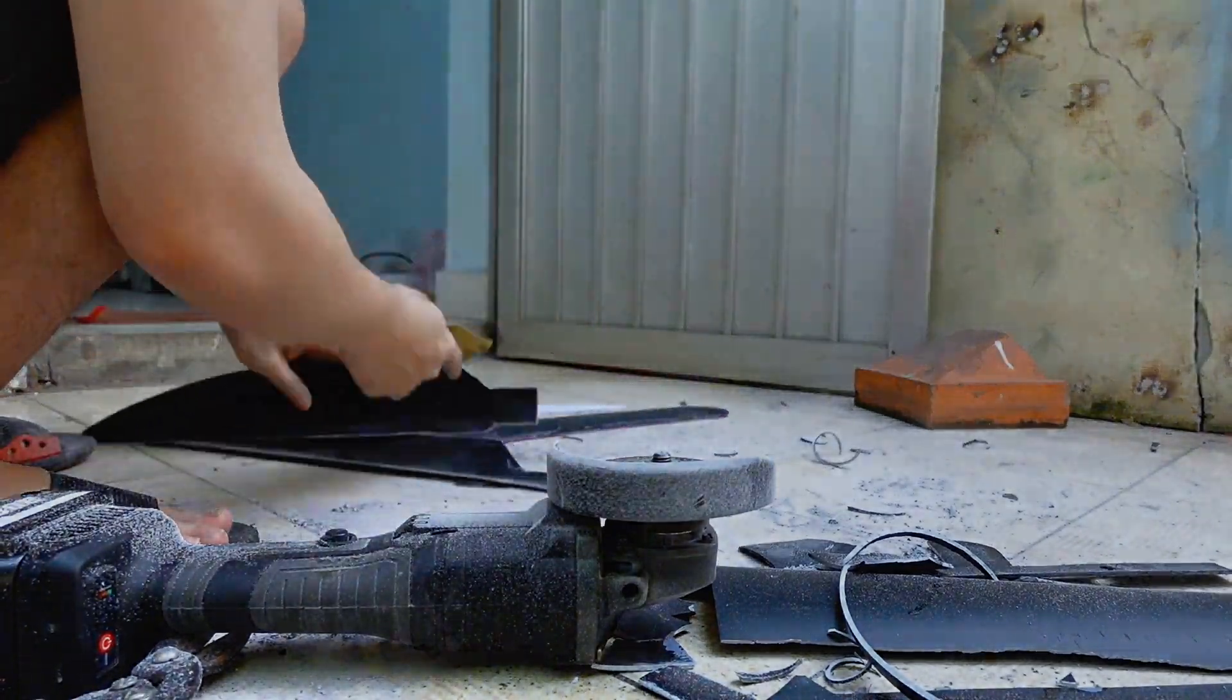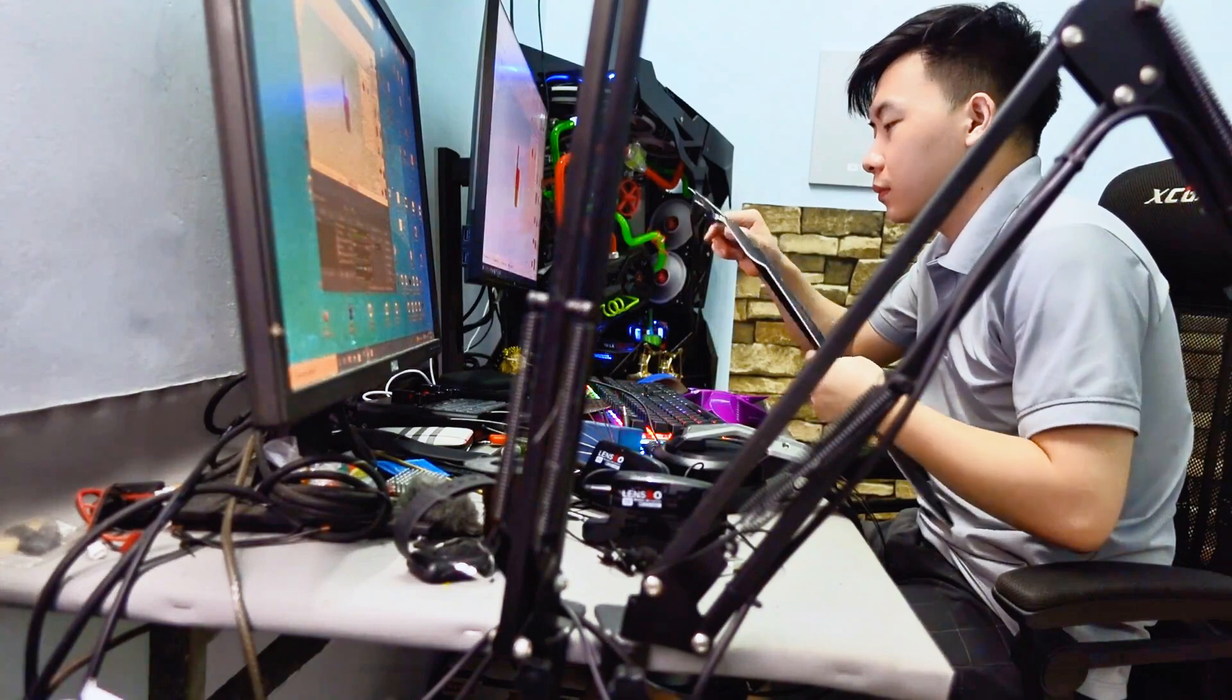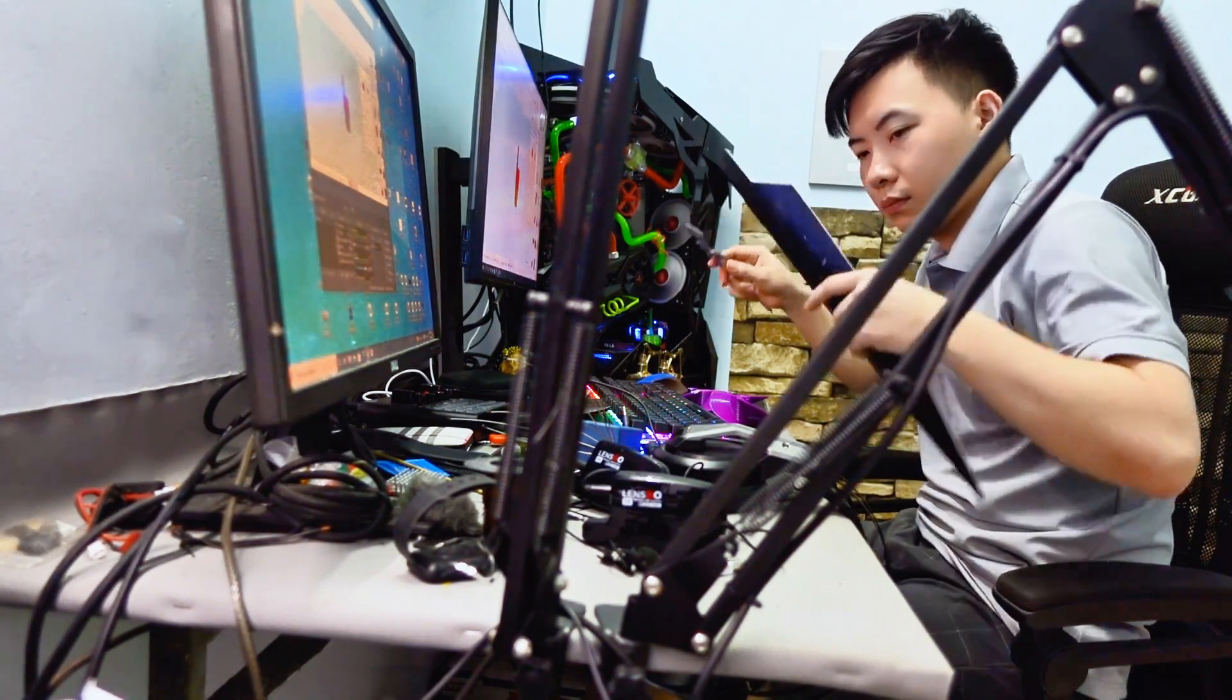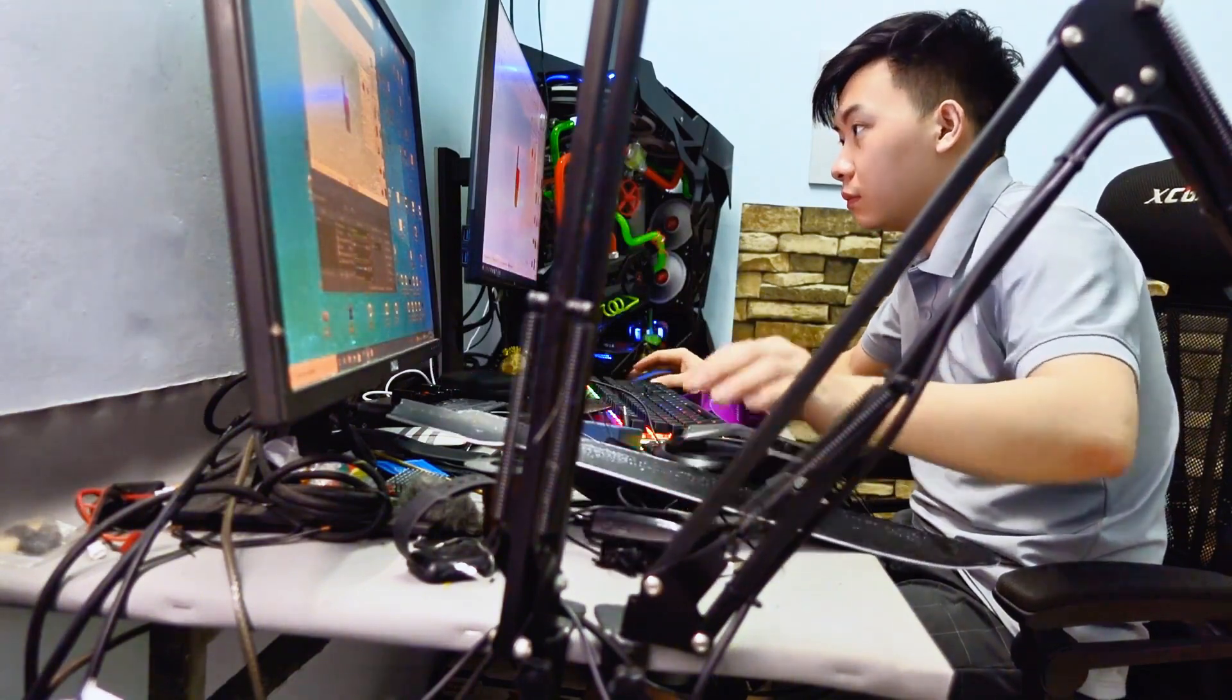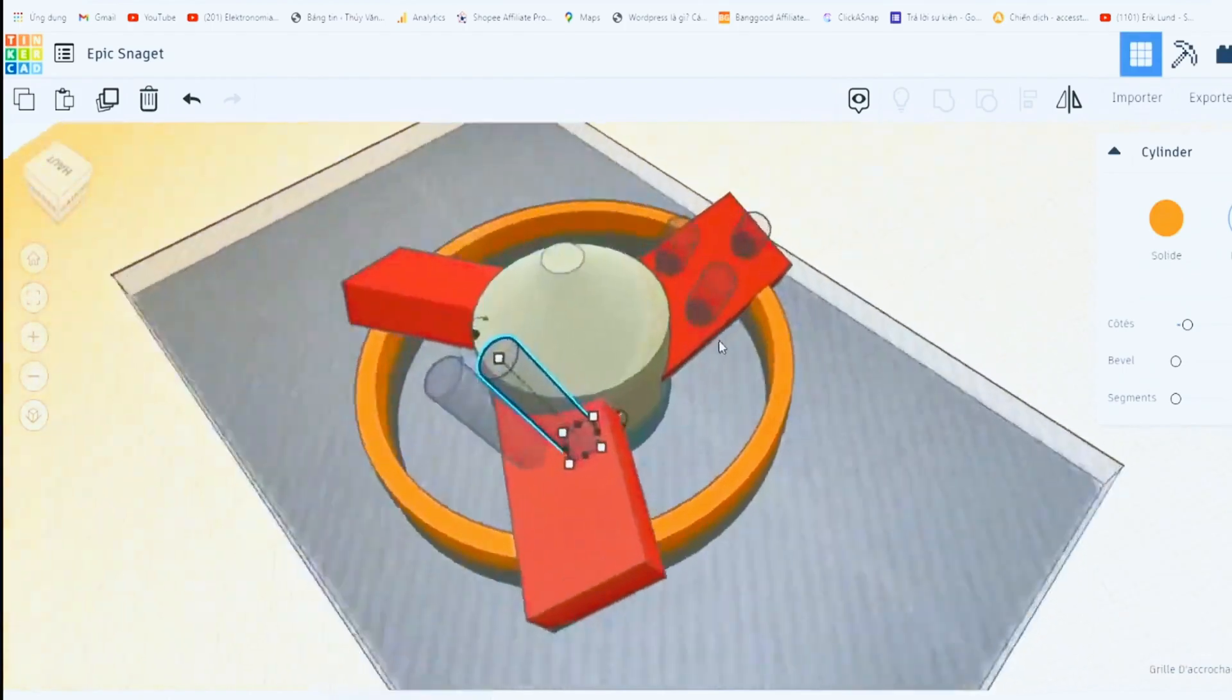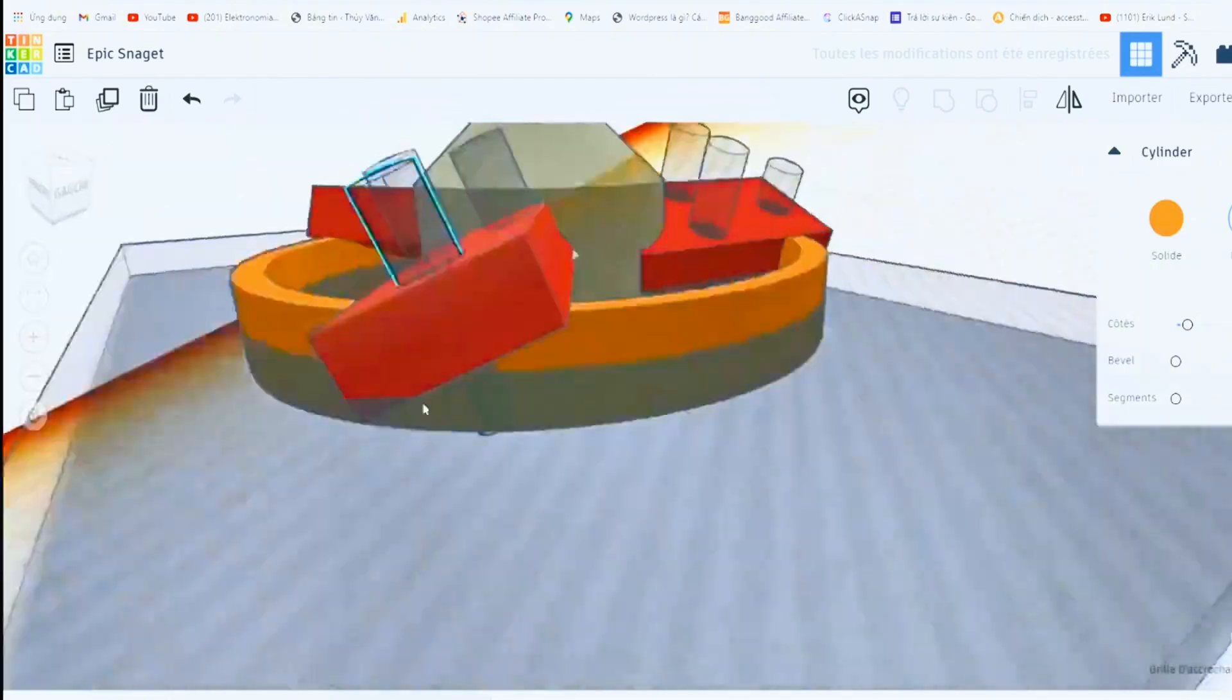Now I'll move on to making the shaft to hold the three blades in place, making sure it's well balanced. I'll be using 3D printing technology to design and print a shaft that securely holds the three blades and keeps everything nicely balanced. Since I'm currently learning 3D design, I'm using this online 3D design software. It's really quick, simple, and convenient.